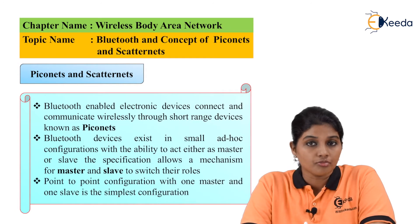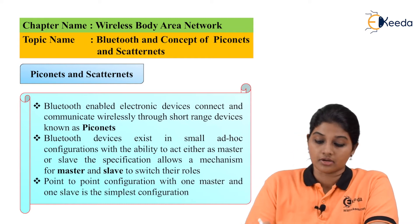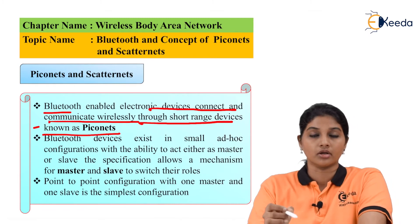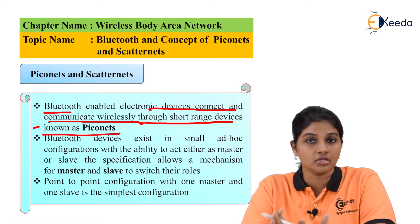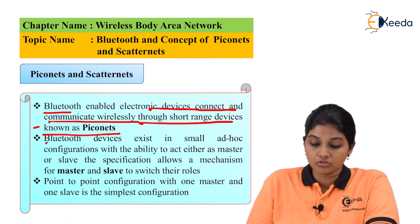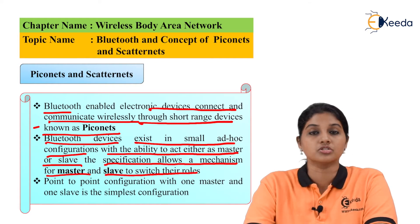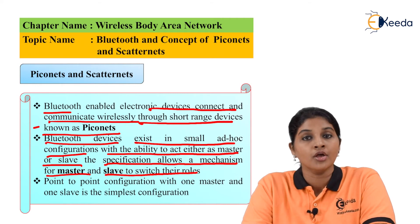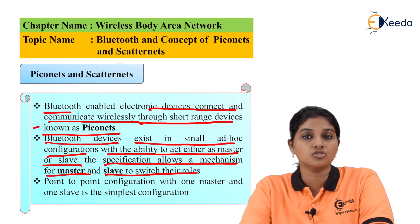Now let's move on to the concept of Piconet and Scatternet. Bluetooth-enabled electronic devices connect and communicate wirelessly through a short-range network called a Piconet. Whenever two or more Bluetooth-enabled devices form a network within a short range, they form a Piconet. Bluetooth devices exist in a small ad hoc configuration with the ability to act either as a master or a slave, and the specification allows a mechanism for master and slave to switch roles.